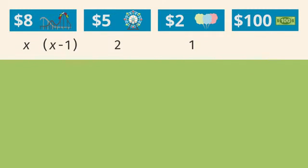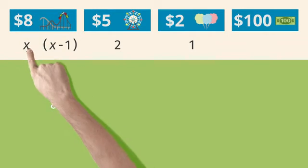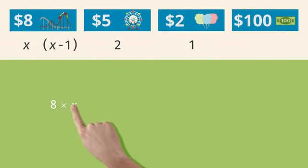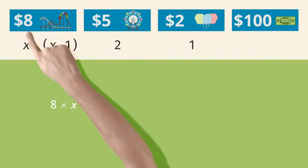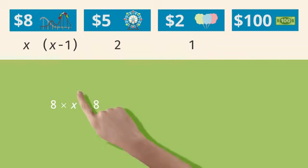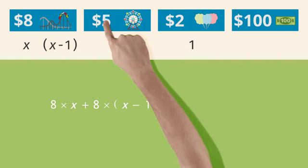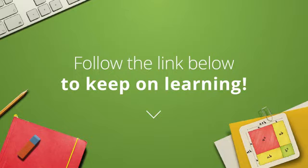Let's write our equation. $8 for the roller coaster times X for the number of rides Kayla takes. Add another $8 for the roller coaster times X minus 1 for Sam's rides. Then you add $5 twice.